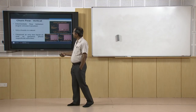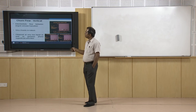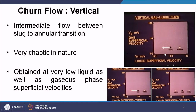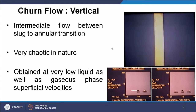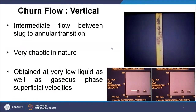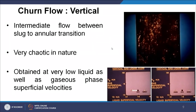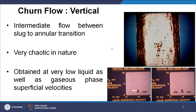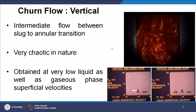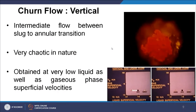The next flow regime is churn flow, which is an intermediate regime between slug flow and annular flow. It is very chaotic in nature, with lots of bubbles and slugs passing through, and the interface is not clearly visible. Churn flow is obtained at very low liquid as well as gaseous phase superficial velocities, and can be seen in the corresponding domain of the flow regime map.